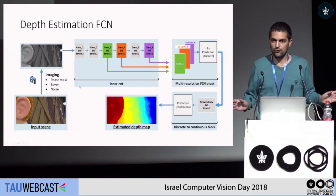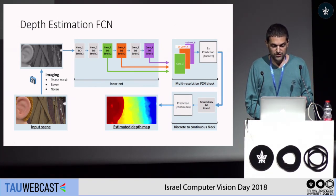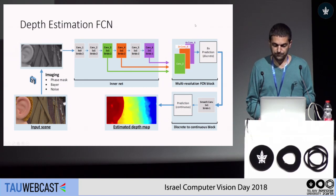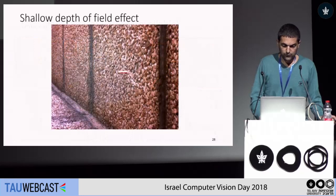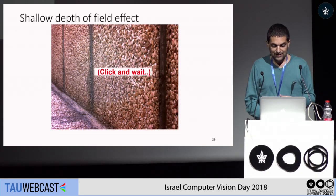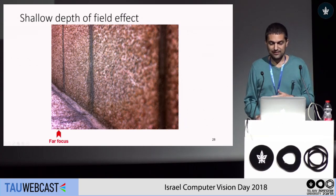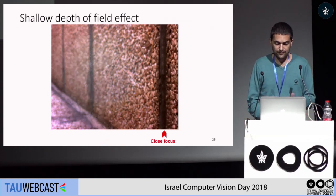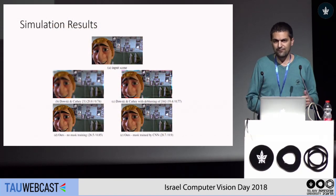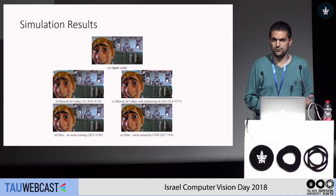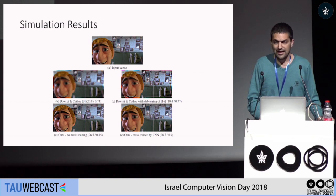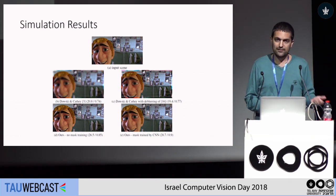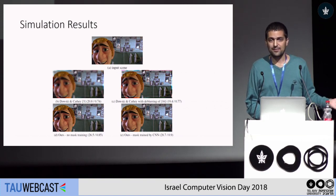After finishing the simulation, we have the parameters of the phase mask. We can go to the lab, manufacture it, and then do the reconstruction using just the reconstruction part of the network. We can do this not only to get depth reconstruction but also to get all-in-focus imaging or to change the focus point of a scene. Here you can see results of refocusing of a scene achieved using our method. We also have another neural network used for refocusing, and with this approach we can also train the network to give us an all-in-focus image and design the phase mask at the same time.